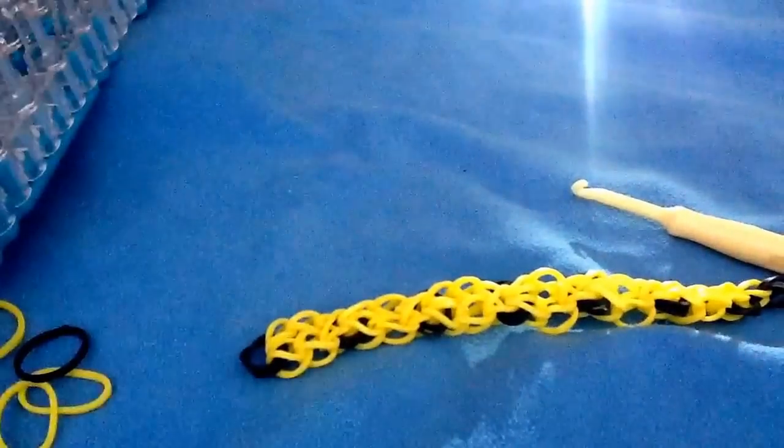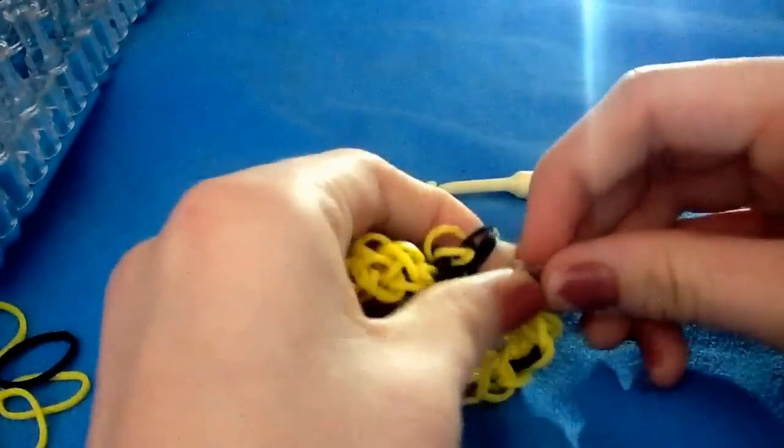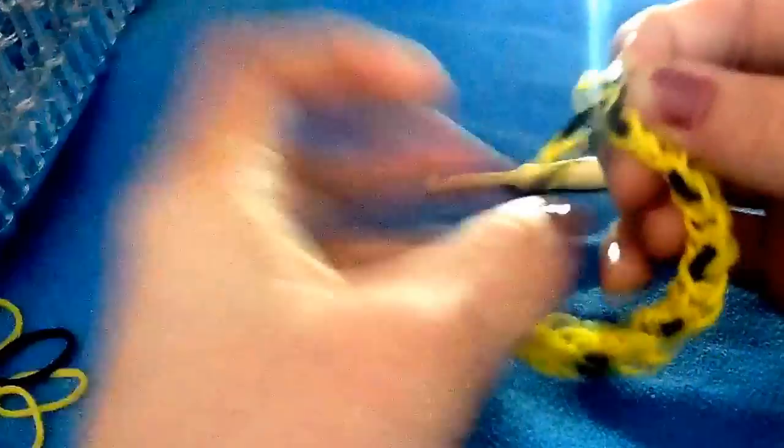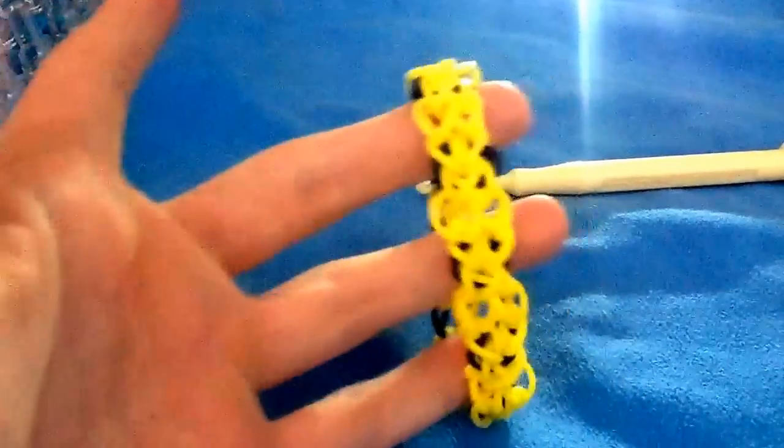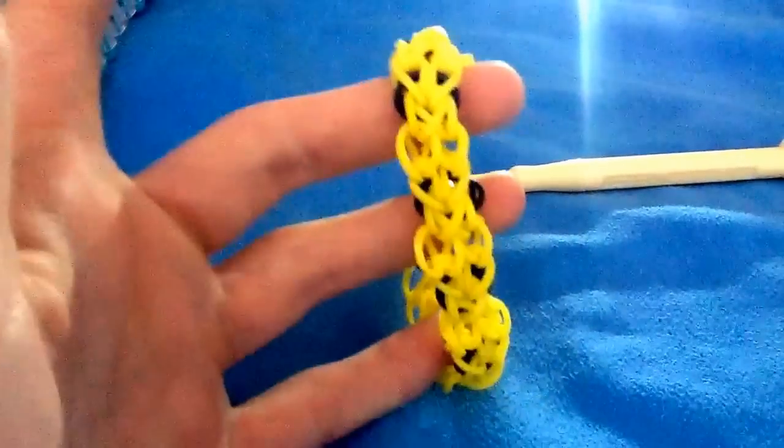Next, grab your C-clip. When you have your C-clip, you're going to clip it to that side right here and to this side right there. And you are all done with your Captain Diamond bracelet. Thanks for watching. Please subscribe, like, and comment.